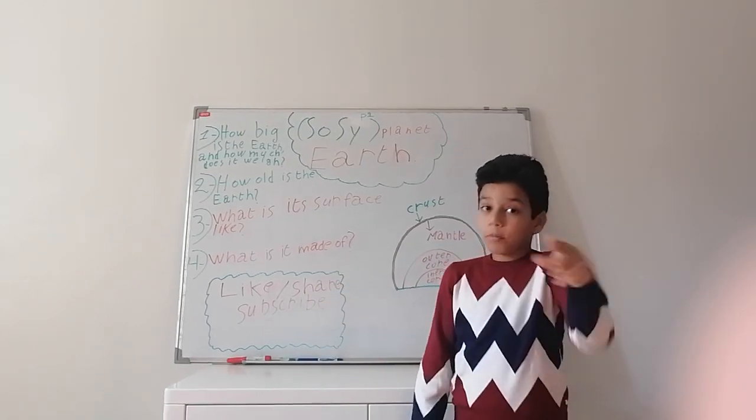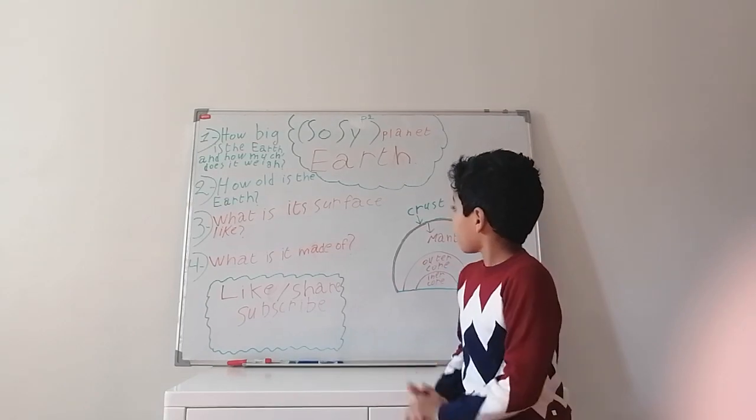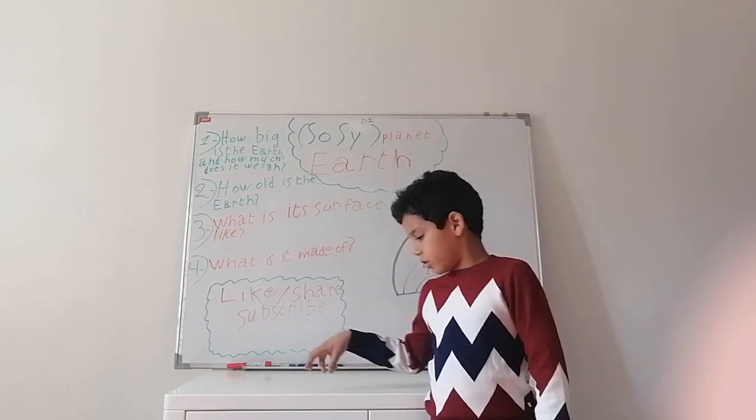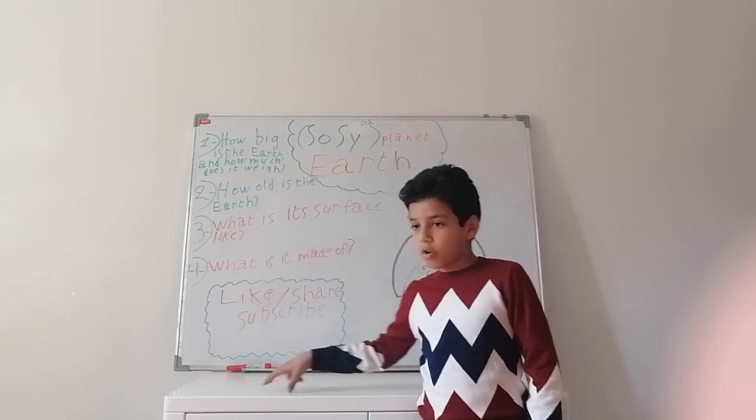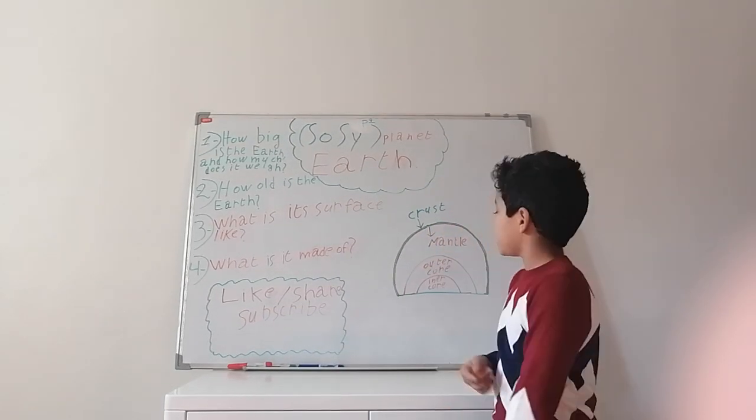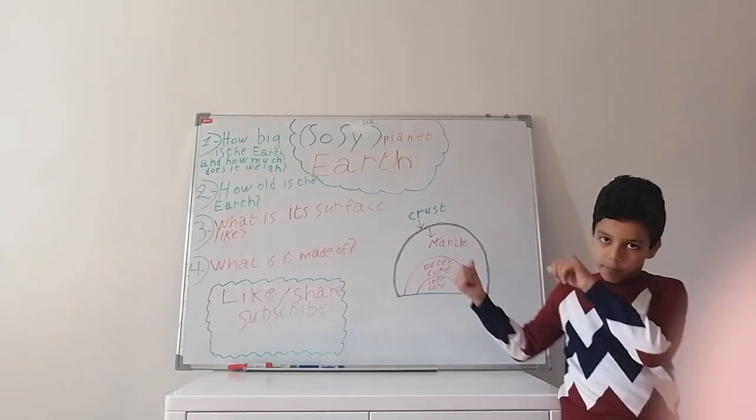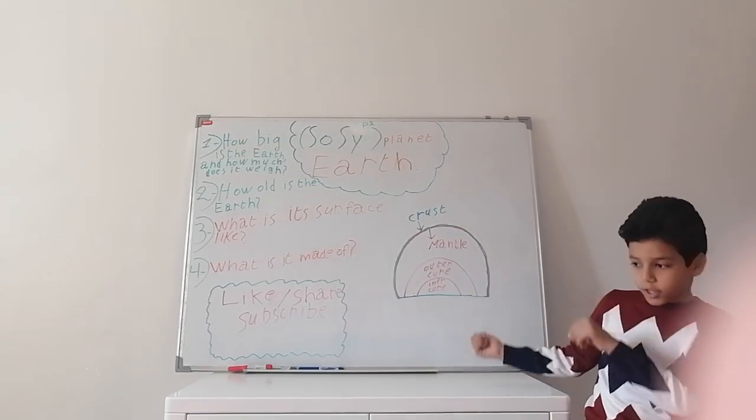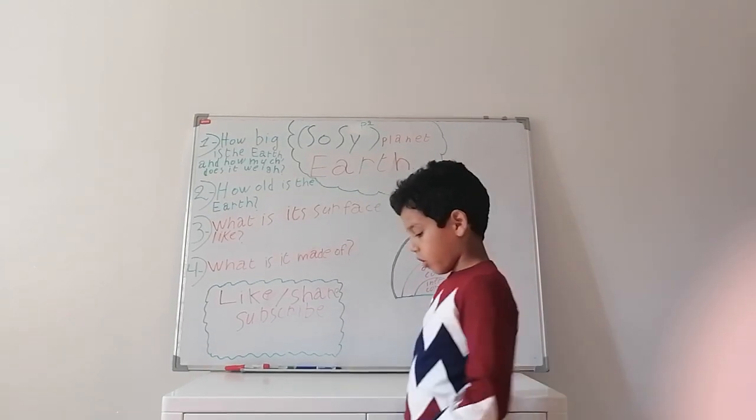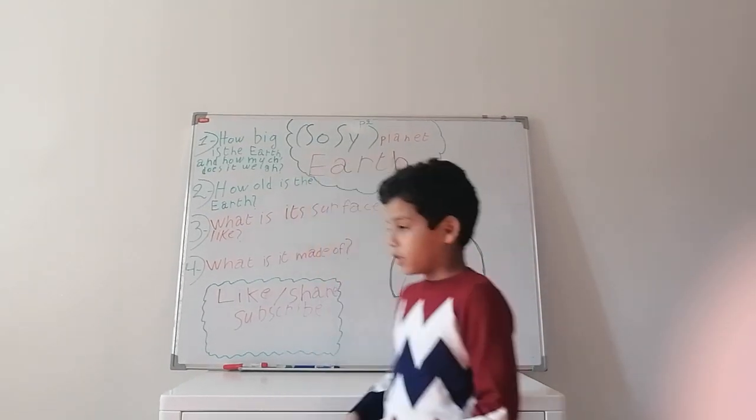What is its surface like? Its surface is continents, islands, and that stuff. What is it made of? It's made of crust, mantle, outer core, and inner core. The crust is the part that we walk on, and the mantle is under the crust.